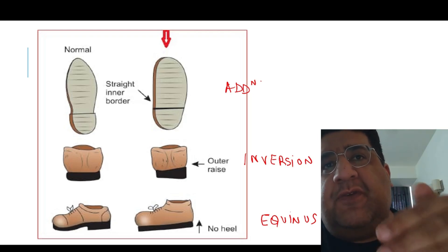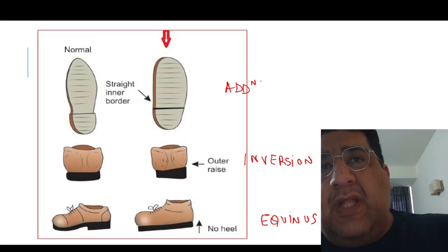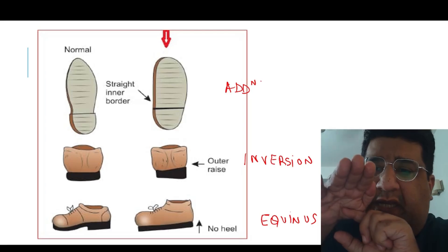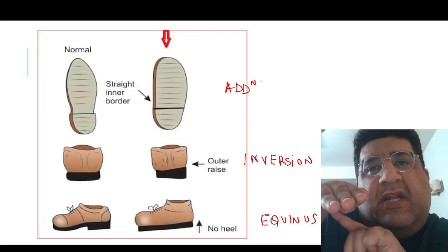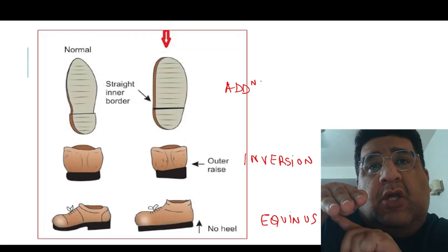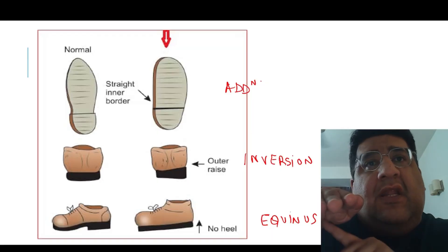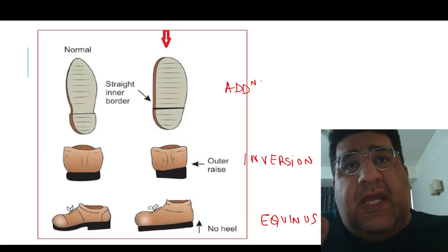What should be the property of a shoe? The property of a shoe is to maintain your correction. First of all, if there is an increase in the heel—imagine this is my right foot—if there is an increase in the heel, that will lead to equinus. Do we want equinus to occur again? No.